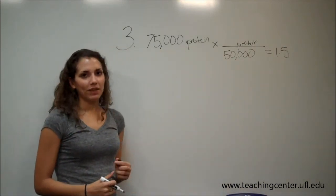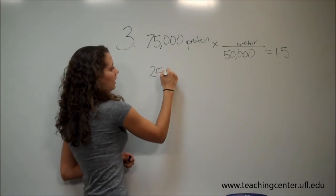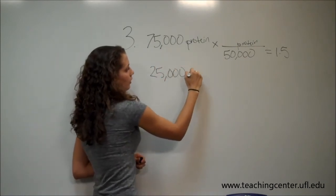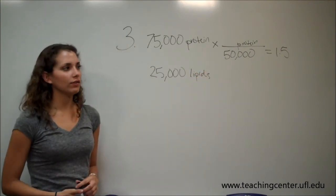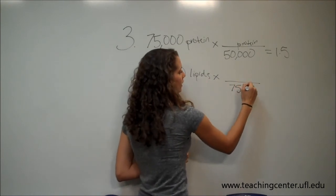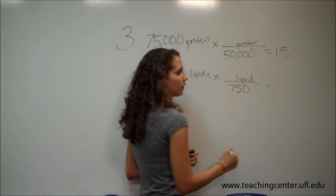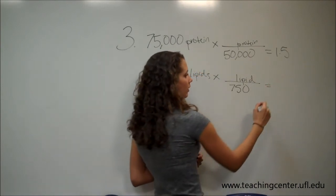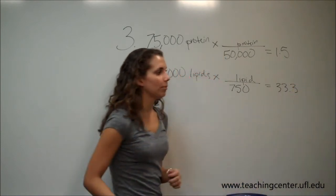Next, we're going to do the same thing for lipids. So we can say there's 25,000 units of lipids per 100,000 units of plasma membrane, and we know that there are 750 units per lipid. So when we solve this, we get 33.3 lipids.